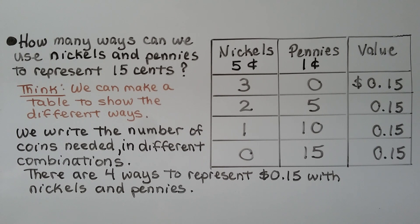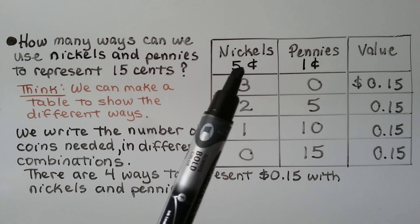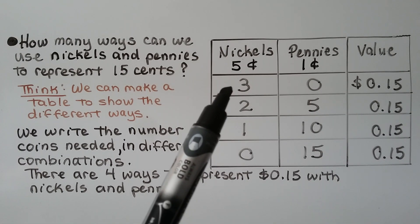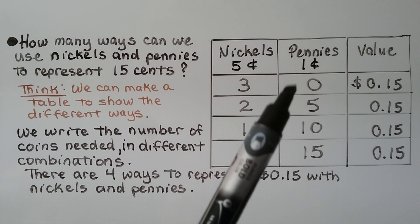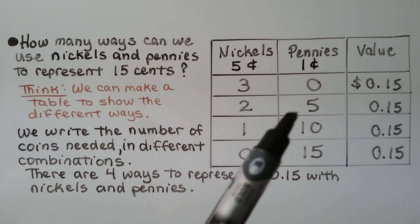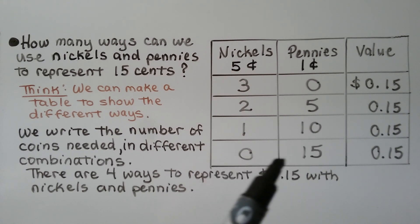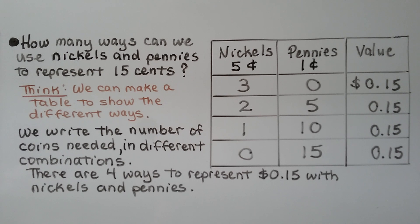How many ways can we use nickels and pennies to represent 15 cents? We can make a table with columns for nickels, pennies, and total value. We can use three nickels and zero pennies; two nickels and five pennies; one nickel and ten pennies; or zero nickels and 15 pennies. There are four ways to represent 15 cents with nickels and pennies, and the table helps us see the information quickly and easily.